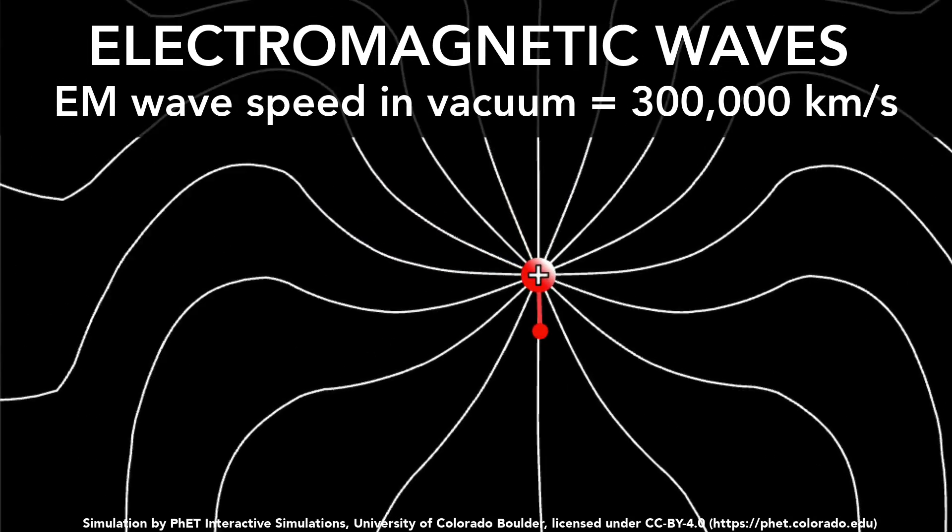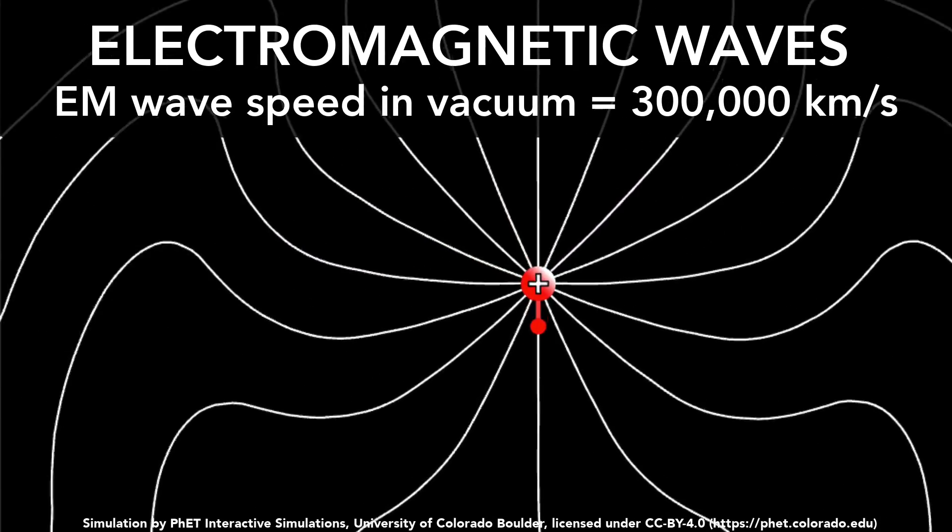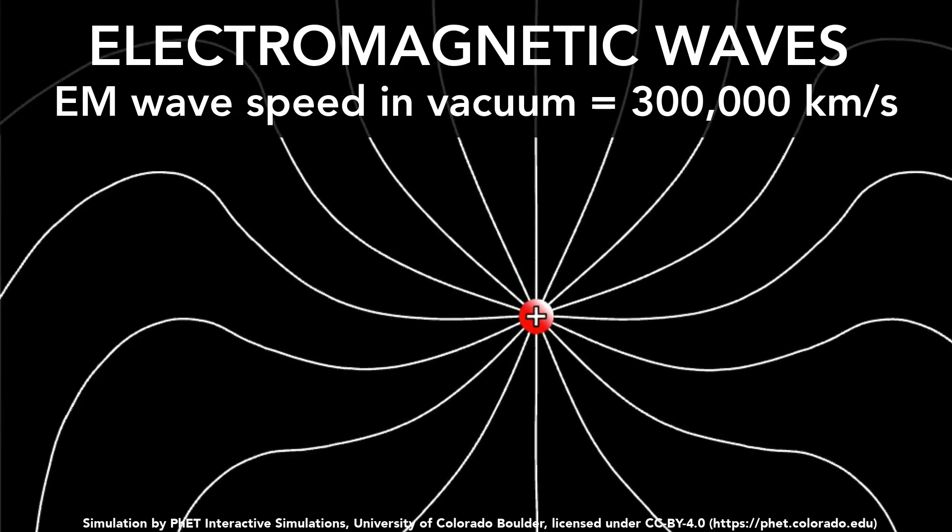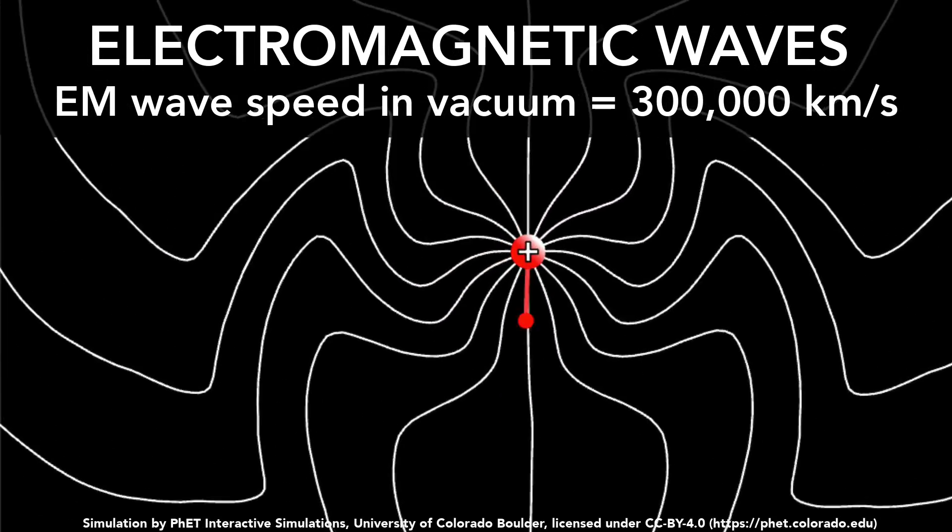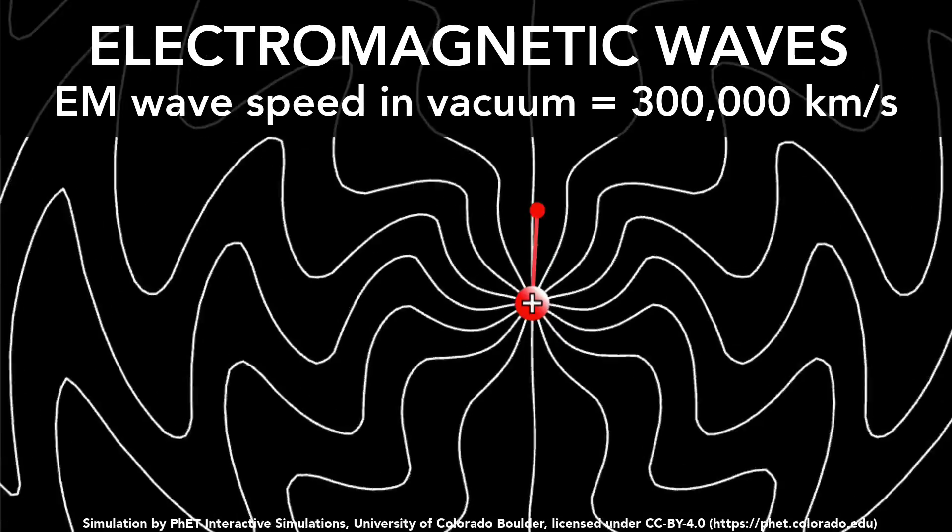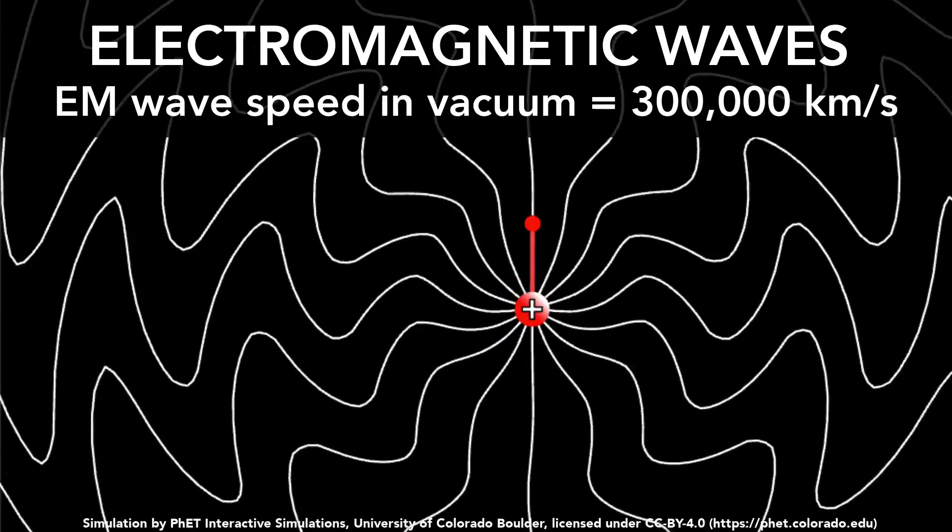And it also has frequency. So for example, you can see this is low frequency, less number of waves traveling per second. And then we can have high frequency, more number of waves traveling per second, because I'm wiggling it with higher frequency.